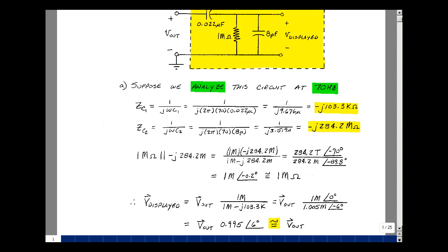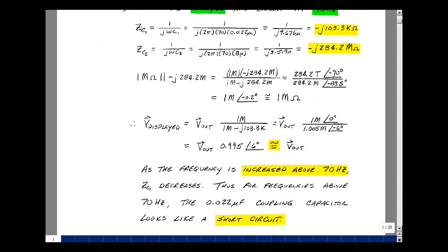Now, as frequencies increase, the impedance of this 0.022 microfarad capacitor gets smaller and smaller. This makes our voltage divider even closer to 1. In other words, as the frequency increases above 70 hertz, this 0.022 microfarad capacitor looks like a short circuit.